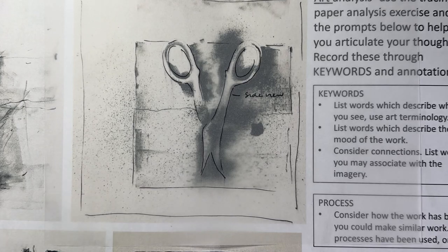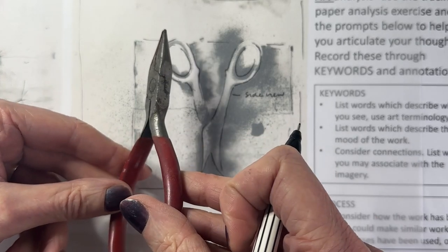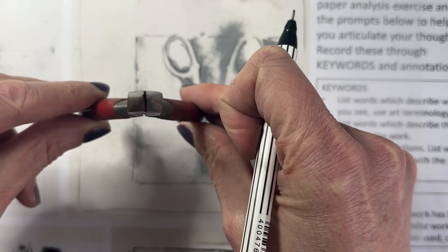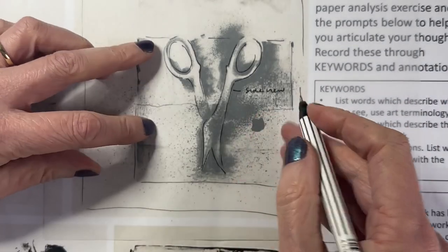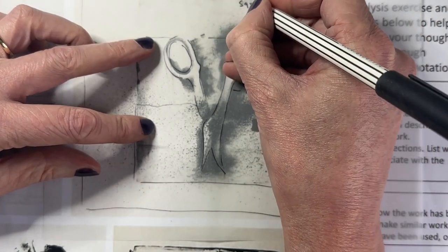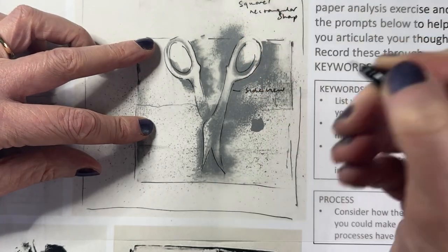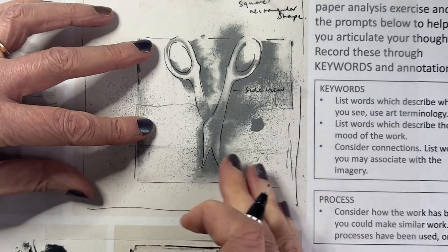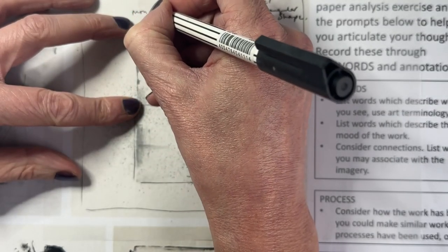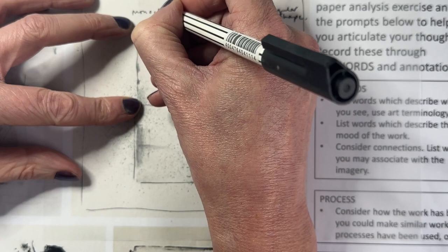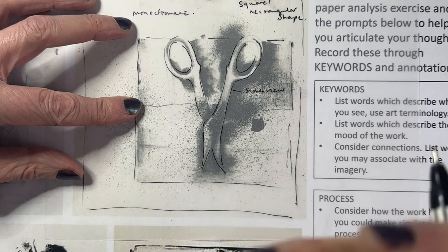By side view, I mean it's not in a three-quarter view, and it's not looking at an unusual end — it is a very clear side view. That's an important thing, and it's within a kind of square, rectangular shape — what we'd call the field, the picture plane, the picture surface. One thing I can note straight away: it's monochromatic.